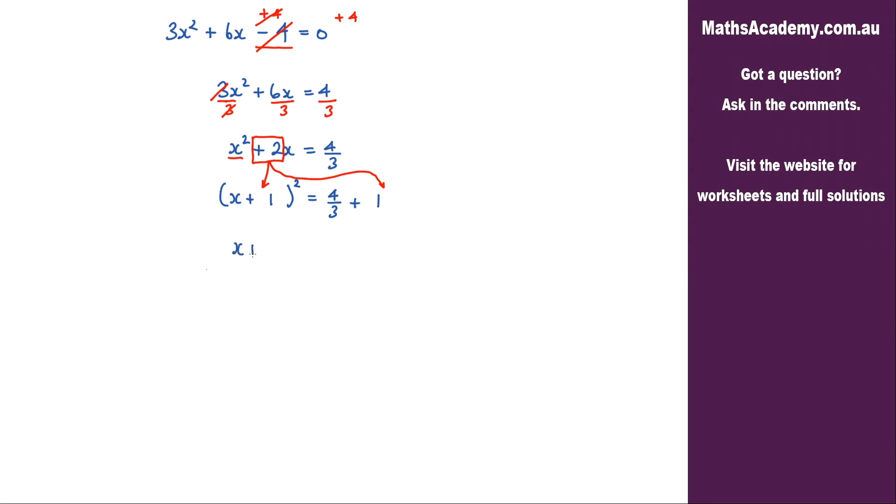So we've got x plus 1 squared is equal to, now 4 over 3 plus 1. Well this 1 we can write that as 3 over 3. So I've got 4 over 3 plus 3 over 3 which is 7 over 3.